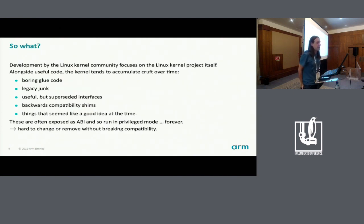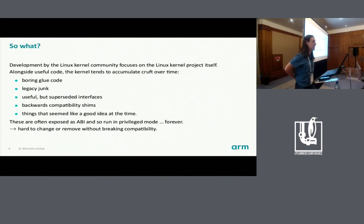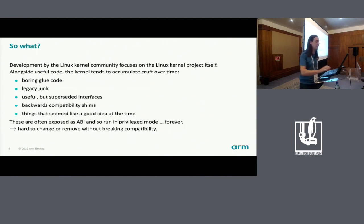So what's the impact of that? In practice, a lot of the stuff we develop ends up in the privileged code base of the kernel, which means we tend to accumulate in privileged mode some glue and legacy stuff — features that are valuable but have been superseded by more flexible interfaces over time, backwards compatibility code, and some things that seemed like a good idea when originally added but may not now. Because these are exposed via a low-level interface, they tend to be stuck running in privileged mode forever unless we're willing to break backwards compatibility.